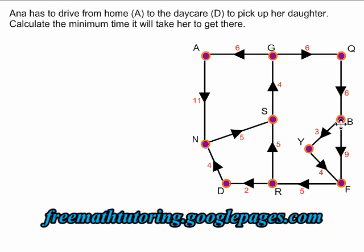She can take one street to go from B to F, which will take nine minutes, or she can take these two smaller streets, which will combine to seven minutes. It's more efficient for her in terms of minimum time to take the two smaller streets. Then she goes from F to R, and from R to the daycare, and she's finished.